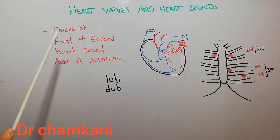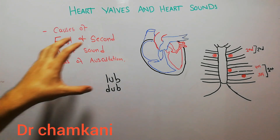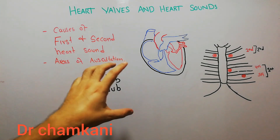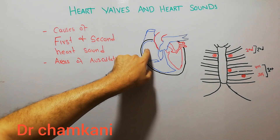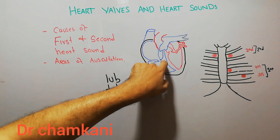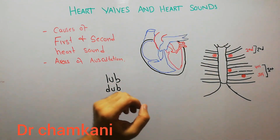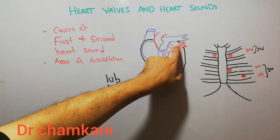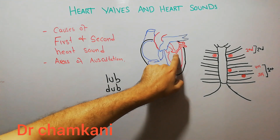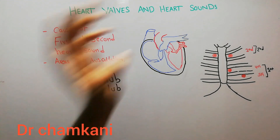So how are the first and second heart sounds generated? We will quickly revise how blood flows through the heart. Initially blood comes into the right atrium, then goes into the right ventricle, and from the right ventricle blood goes through the pulmonary arteries into the lungs where it gets oxygenated. The oxygenated blood returns into the left atrium, then into the left ventricle, and from there into the aorta.